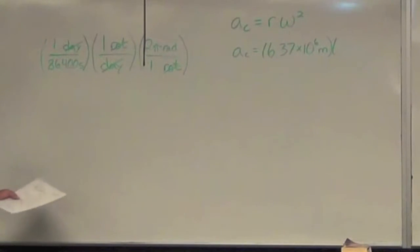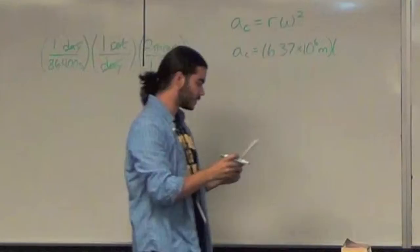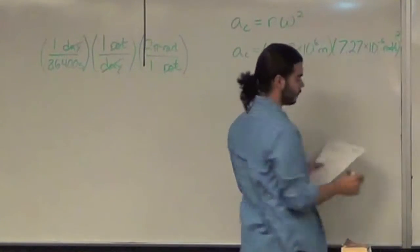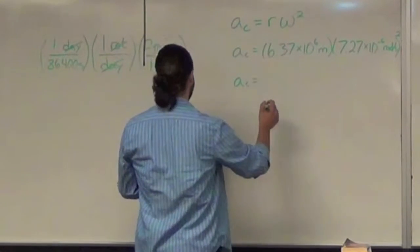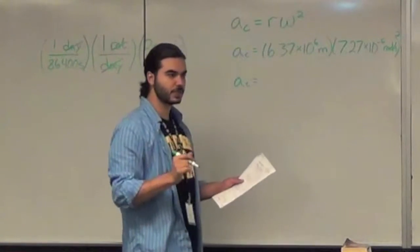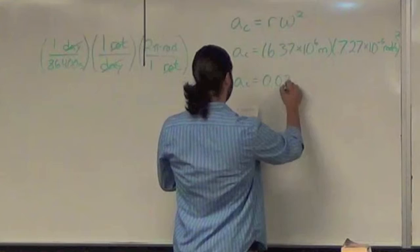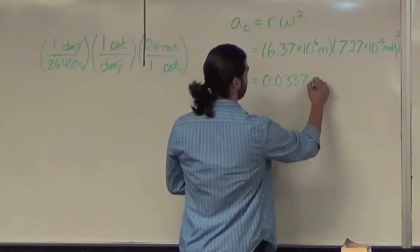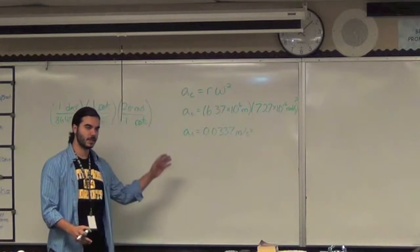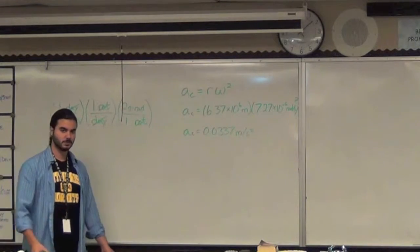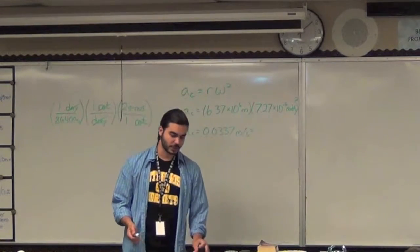If you were to plug this in your calculator, you would end up getting the angular velocity or the radians per second, which is squared. If you do that calculation, you end up getting the acceleration due to the centrifugal force on us right now as we speak due to the spin of the Earth is 0.0337 meters per second squared. As compared to the 9.8 meters per second squared due to gravity, that is negligible. That's why it doesn't seem like we're spinning on the Earth.